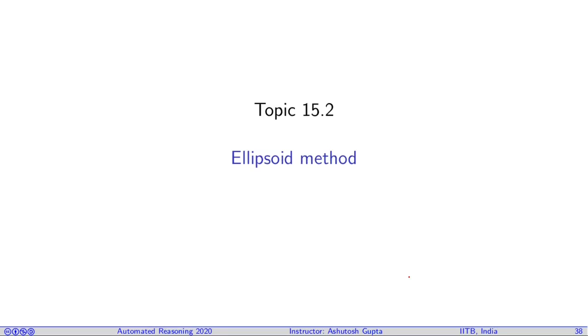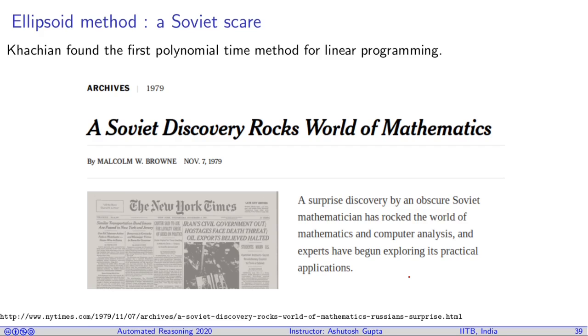Now we will look at the method called ellipsoid method. This method is not important in terms of practical importance, but it is important because of theoretical understanding. This method was discovered in 1980 in the Soviet Union and it became big news. In 1979, you can see this news article in New York Times saying Soviet discovery has basically rocked the mathematical world, and they will optimize better than us and therefore we will lag behind in the Cold War. This is a bit dramatic statement, but people were scared in those times.